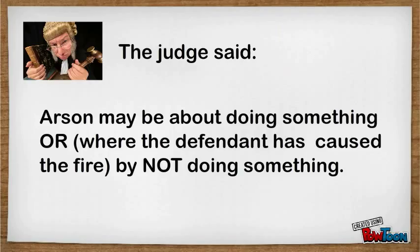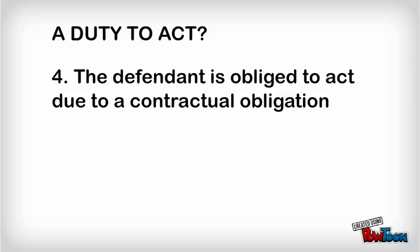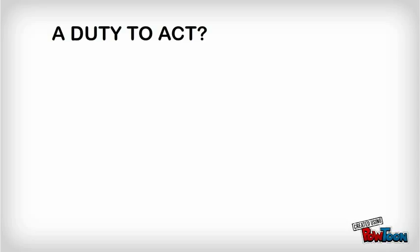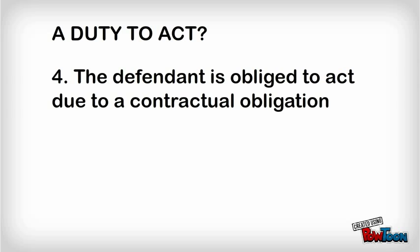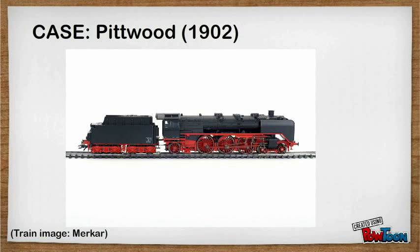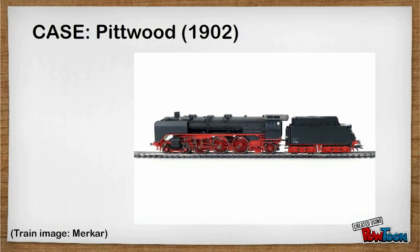The fourth situation is where the defendant is obliged to act due to a contractual obligation. A duty to act can arise from a contract, especially a contract of employment. For example, in Pitwood, a railway employee was supposed to keep a level crossing gate shut whenever a train was about to pass. He forgot to shut the gate, with the result that a man was hit by a train and killed when crossing the line with his hay cart. The gatekeeper was held liable for manslaughter.